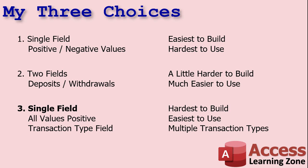The third method is the most advanced but gives you the most flexibility. All values are positive and you enter them into one field, but you have a transaction type identifier that tells the database what kind of transaction it is. It's the hardest to build, but I think it's the easiest to use because you pick the type and the database knows whether it should be positive or negative. It allows additional flexibility — you can separate withdrawals, deposits, transfers in, transfers out, and bank fees as separate transaction types. This is great for a more full-fledged accounting system.